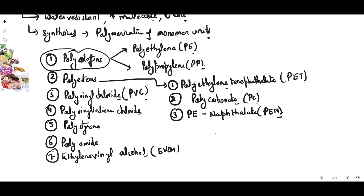All these types are categorized according to their monomer units. As mentioned, plastic is formed by the polymerization of monomer units. In polyolefins, olefins are polymerized; in polyesters, ester monomer units are used; in PVC, vinyl chloride is the monomer unit. That is why all names carry the prefix 'poly,' meaning polymerization, and the rest of the name indicates the monomer units used.